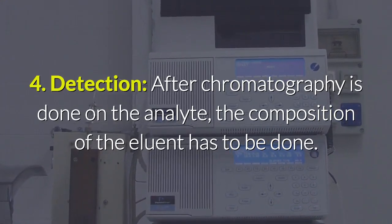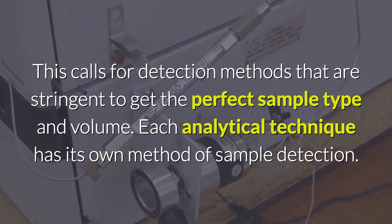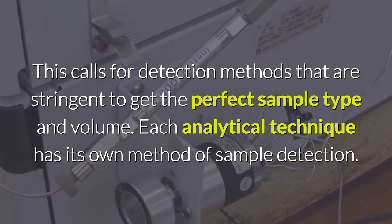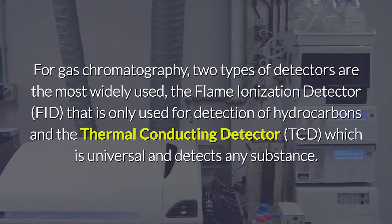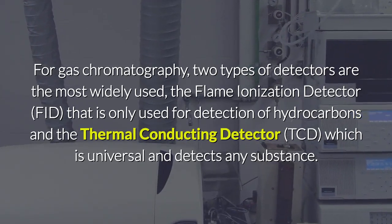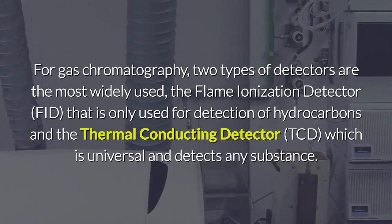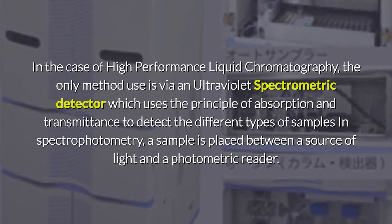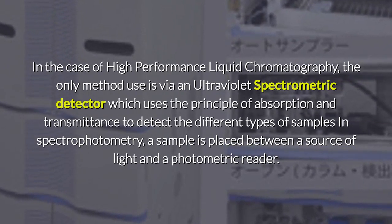After chromatography is performed on the analyte, detection of the eluent composition is required. Each technique has its own detection method. For gas chromatography, two widely used detectors are the flame ionization detector (FID), used only for detection of hydrocarbons, and the thermal conductivity detector (TCD), which is universal and detects any substance. For HPLC, detection is via an ultraviolet spectrometric detector, which uses the principles of absorption and transmittance.